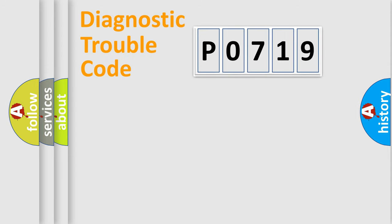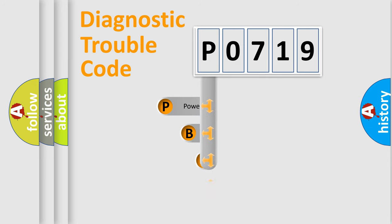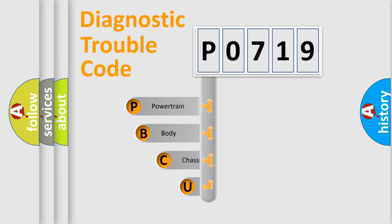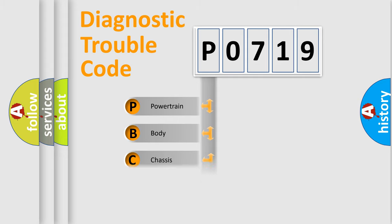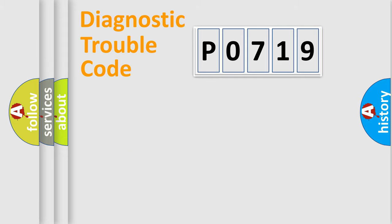Let's do this. First, let's look at the history of diagnostic fault code composition according to the OBD2 protocol, which is unified for all automakers since 2000. We divide the electrical system of the automobile into four basic units: Powertrain, Body, Chassis, and Network.